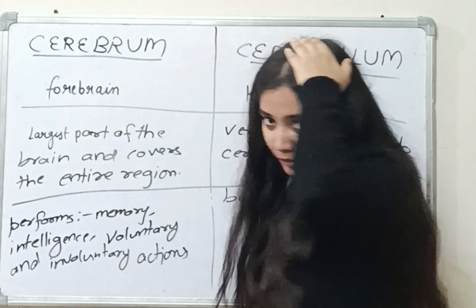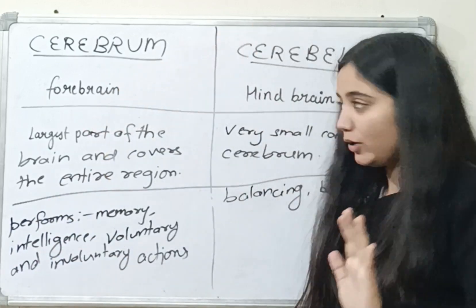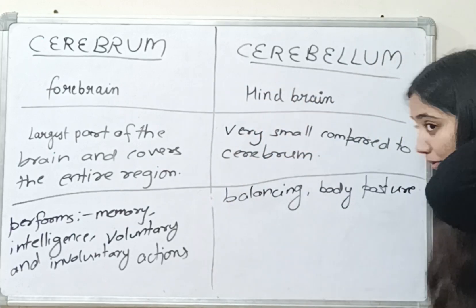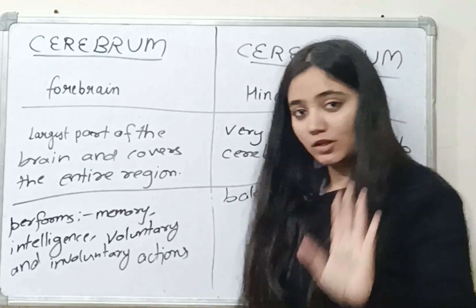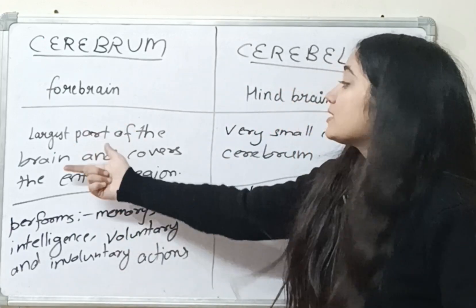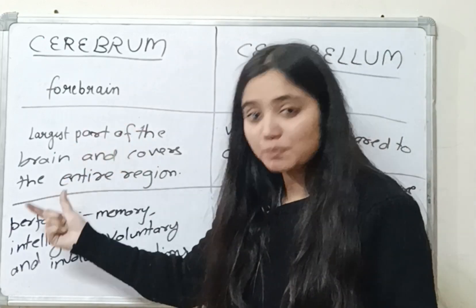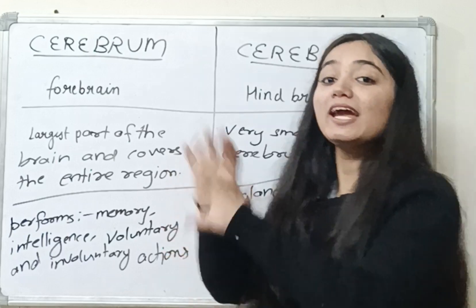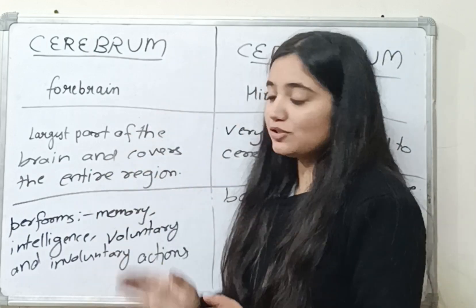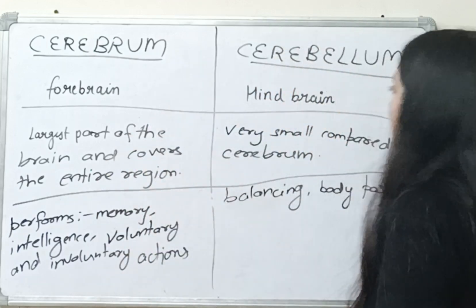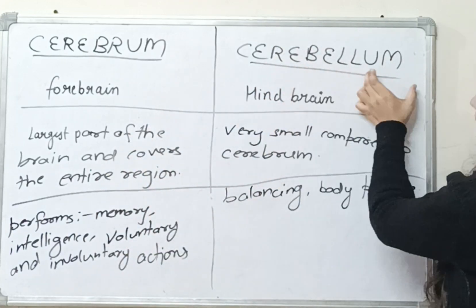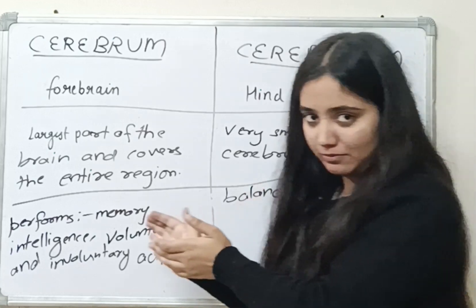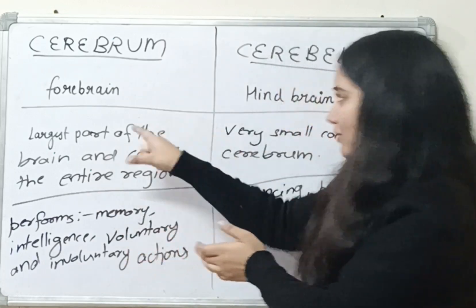Cerebrum is the forebrain part. Cerebellum is the hindbrain part. The most largest part of the brain covers the entire region of the brain. Cerebellum is very small compared to Cerebrum.